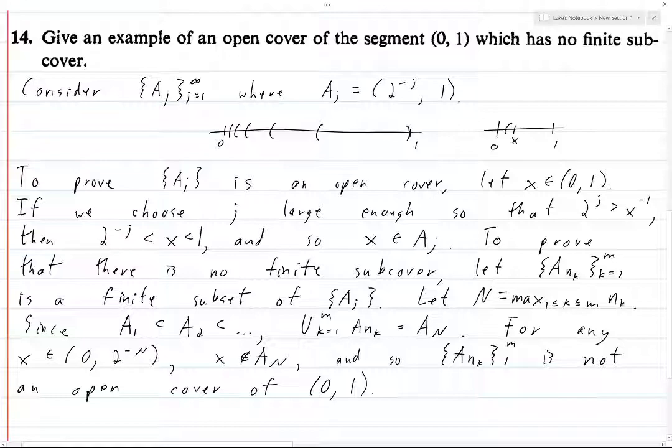And so a n k from k equals 1 to m is not an open cover of the open interval from 0 to 1. So if you take, we've taken an arbitrary finite sub-cover and proven that it's not a cover of this open interval. And this holds for an arbitrary finite sub-cover, and therefore no finite sub-cover is an open cover of the open interval from 0 to 1. So thus, this collection of a j's has no finite sub-cover.